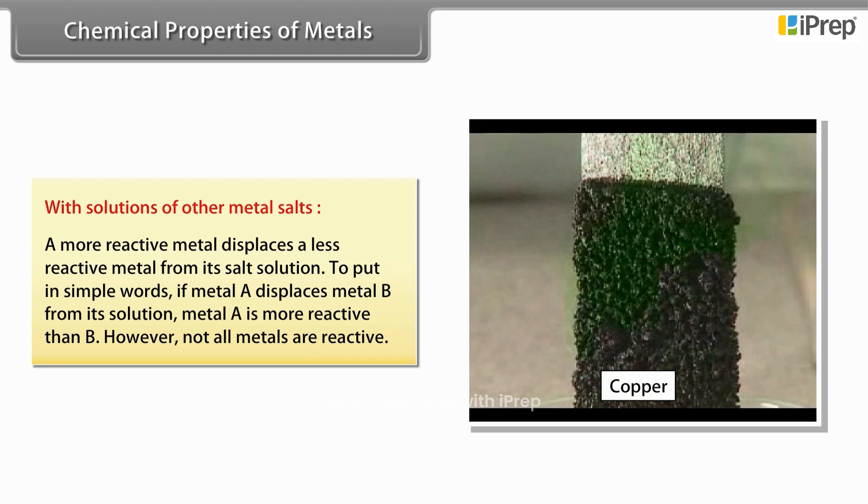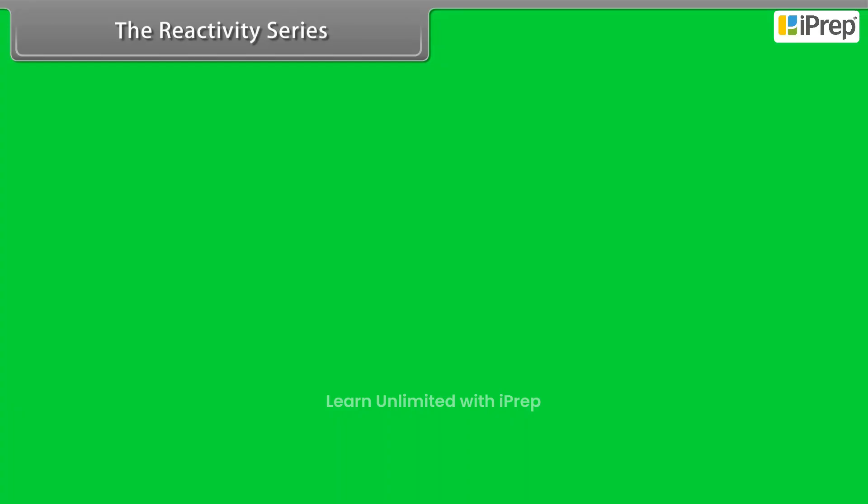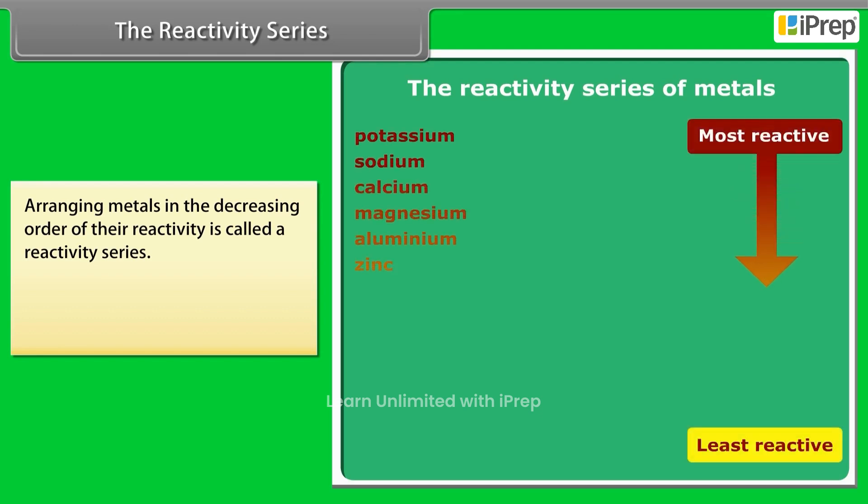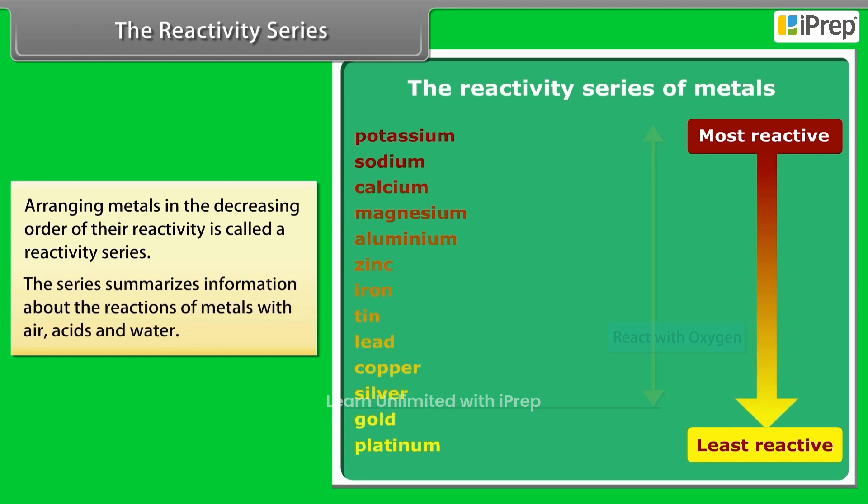The reactivity series: Metals being arranged in the decreasing order of their reactivity is called a reactivity series. It is used to summarize information about the reactions of metals with air, acids, and water.